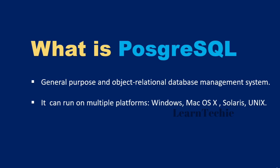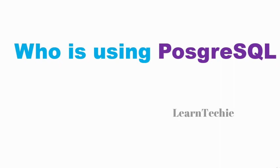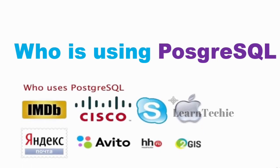PostgreSQL is free and open source. The source code is available under the PostgreSQL license — a liberal open source license — so you're free to use, modify, and distribute PostgreSQL in any form. PostgreSQL requires very minimal maintenance because of its stability. Notable companies currently using PostgreSQL include Apple, Skype, Cisco, and many others.